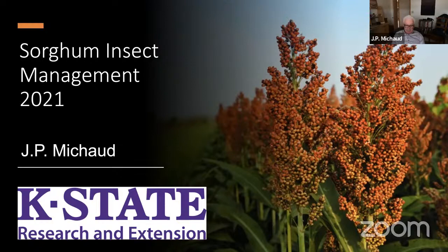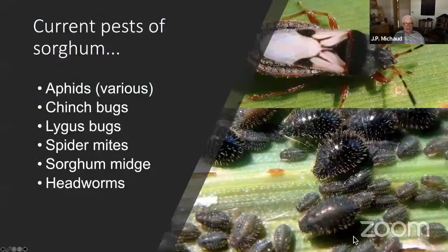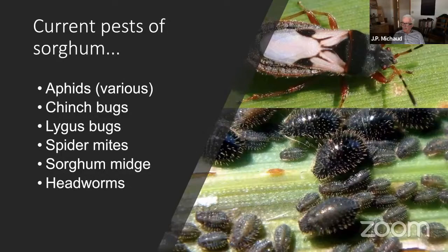This parasitoid has actually moved to attack green bugs and other aphids in wheat — so everything is always changing. These are the pests I'm going to talk about today. We've had some new aphids show up in sorghum in addition to sugarcane aphid. Fortunately, none of these appear to be very abundant, so hopefully they won't be new problems. But you should know what they look like in case they show up in your field.